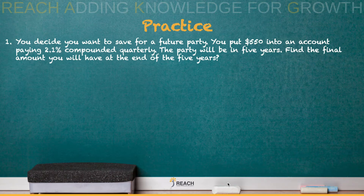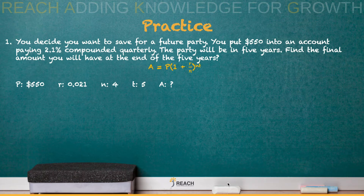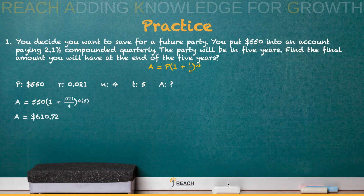Alright, the formula we should have used was compounded for a specific time because it says compounded quarterly. Label all variables with the correct numbers and plug those into the correct formula. Now put that in the calculator: 550 times the quantity raised to the 20th power, because 4 times 5 is 20, and we get $610.72.